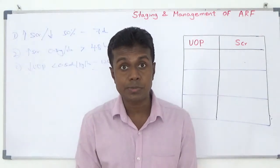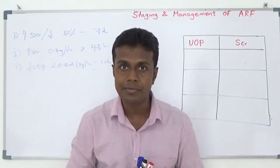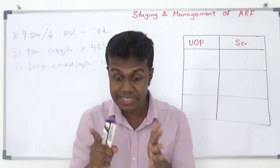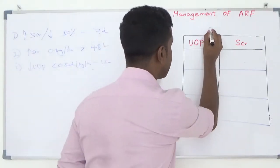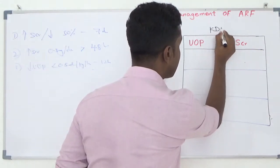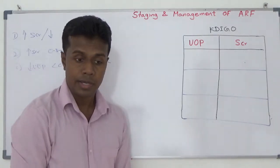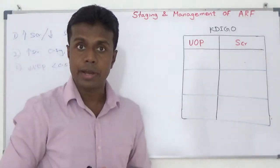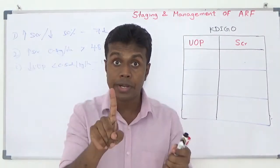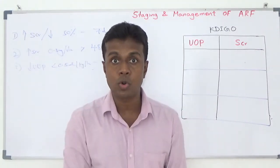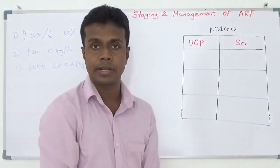The currently practiced staging belongs to the Kidney Disease Improving Global Outcomes criteria — called KDIGO. According to KDIGO criteria, they use three stages of acute renal failure. You have to find out which stage your patient belongs to. They use urine output criteria and serum creatinine criteria.